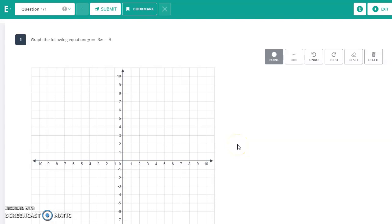This is how your graph functions on Edge Elastic. Here you have on the top right hand corner your point, your line, undo, redo, reset, and delete buttons.